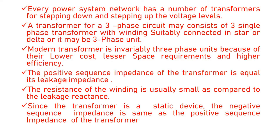The positive sequence impedance of the transformer is equal to the leakage impedance. The resistance of the winding is usually small as compared to the leakage reactance. Since the transformer is a static device, the negative sequence impedance is the same as the positive sequence impedance of the transformer.